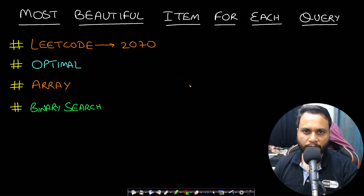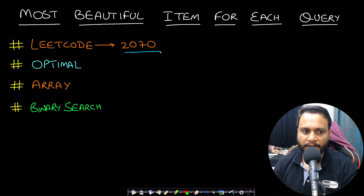Hello guys, welcome back to TechDose. In this video we will look at the Most Beautiful Item for Each Query problem, which is LeetCode number 2070. A previous knowledge of binary search is required in order to solve this problem.